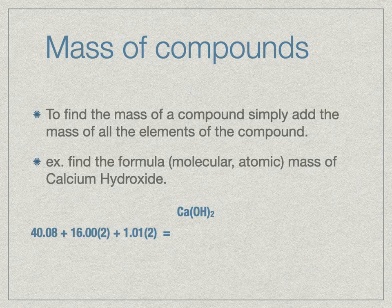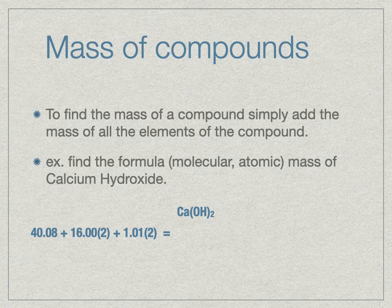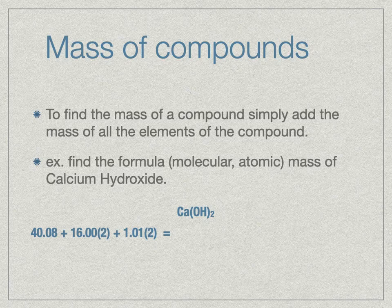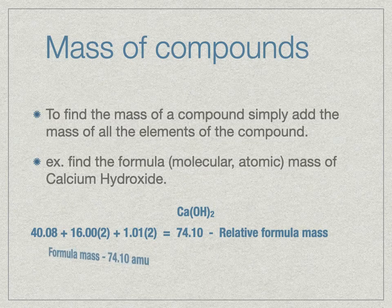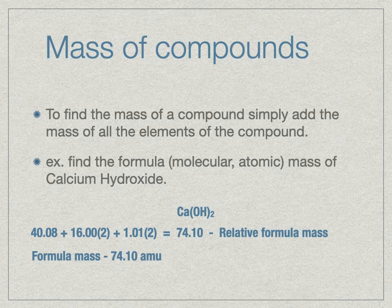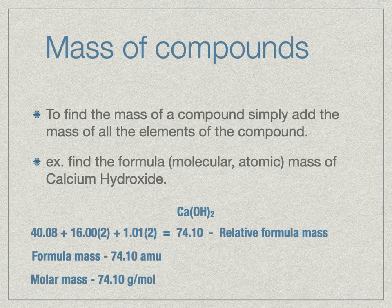Notice every number is to two decimal places — that's what we'll do in this class so we always get the same answer. Pull your numbers from the periodic table with two decimal places. Oxygen is 15.999, which I round to 16.00 — check the third decimal place to decide whether to round up or down. Adding all those numbers gives 74.10, which is the relative formula mass. Formula mass in AMUs is the mass of one formula unit of calcium hydroxide. In grams per mole, 74.10 g/mol is the mass of one mole — 6.02 × 10²³ formula units — of Ca(OH)₂.